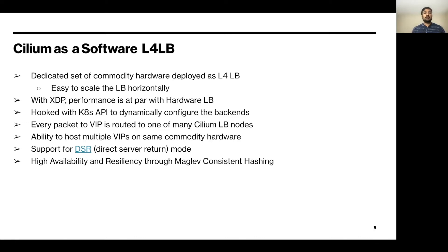As Cilium is hooked directly into the Kubernetes API, any changes to the backend pods get updated to the L4LB instantaneously. Cilium L4LB makes the same forwarding decision across the board, so any packet part of a connection can be routed to any LB node. It also supports DSR mode, which makes it no different from the hardware LB. With Maglev consistent hashing, Cilium provides a highly available and reliable software load balancer.